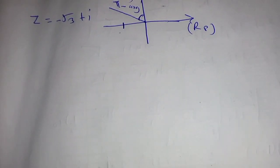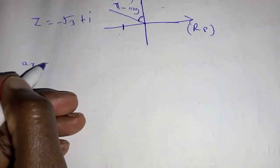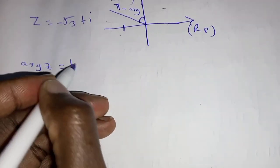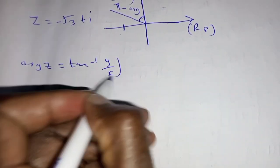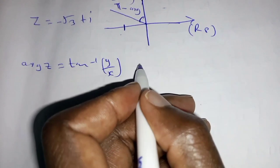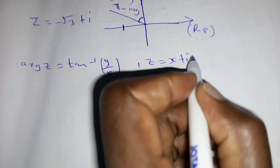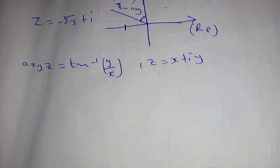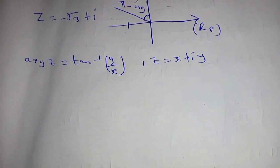We are going to use also the fact that argument of z will be given by tan inverse of y over x, when z is equal to x plus iy. So that is the general case and that is the one we are going to employ in our case.